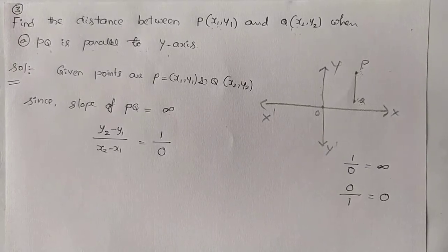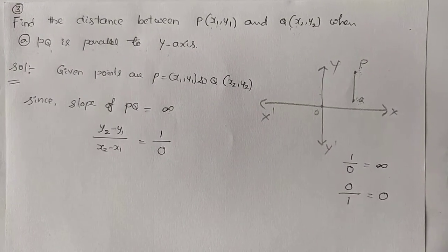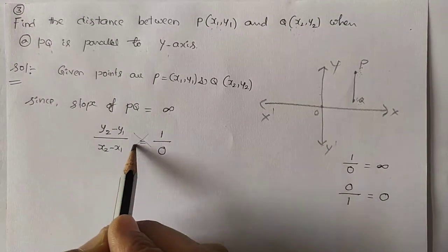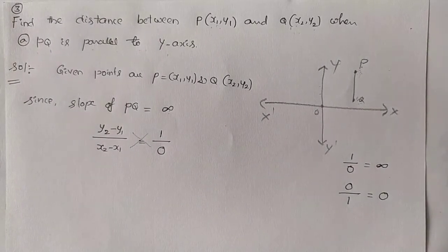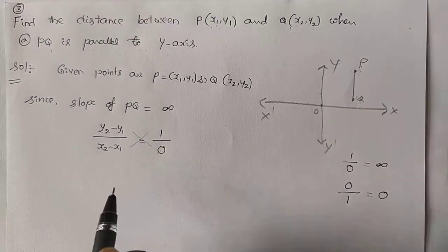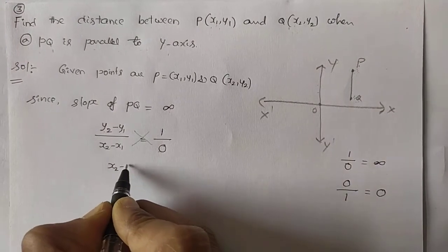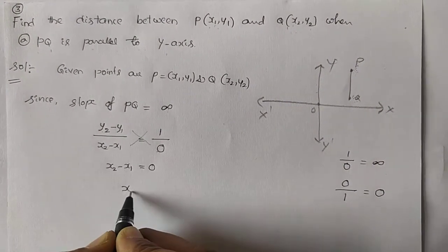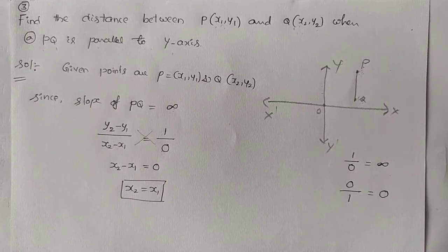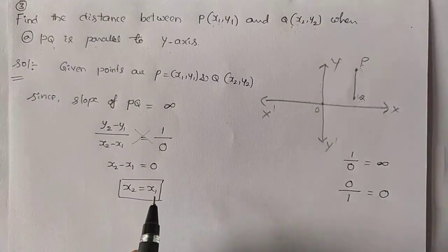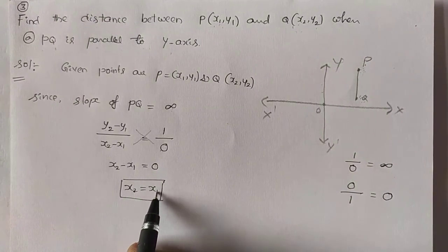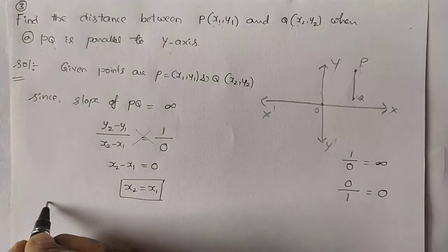Now, take the cross multiplication. We will get (y2 minus y1) into 0 equals 0, so (x2 minus x1) equals 0. Therefore x2 minus x1 equals 0, therefore x2 equals x1. Now we want the distance. Since x2 equals x1, let us find out the distance. Therefore PQ equals the square root of (x2 minus x1) whole square plus (y2 minus y1) whole square.